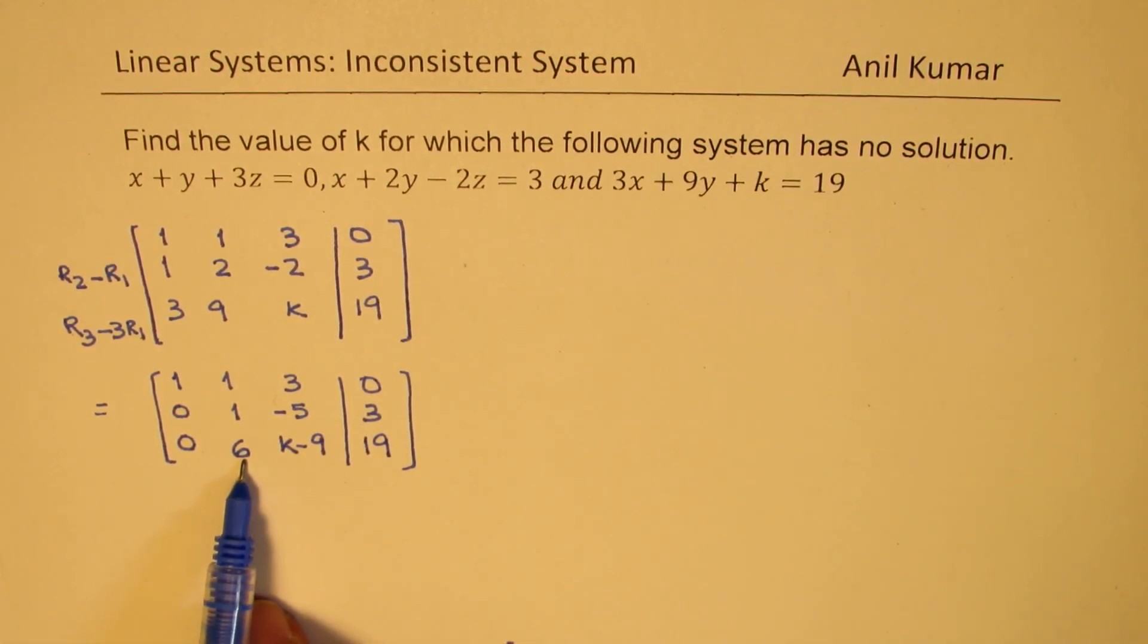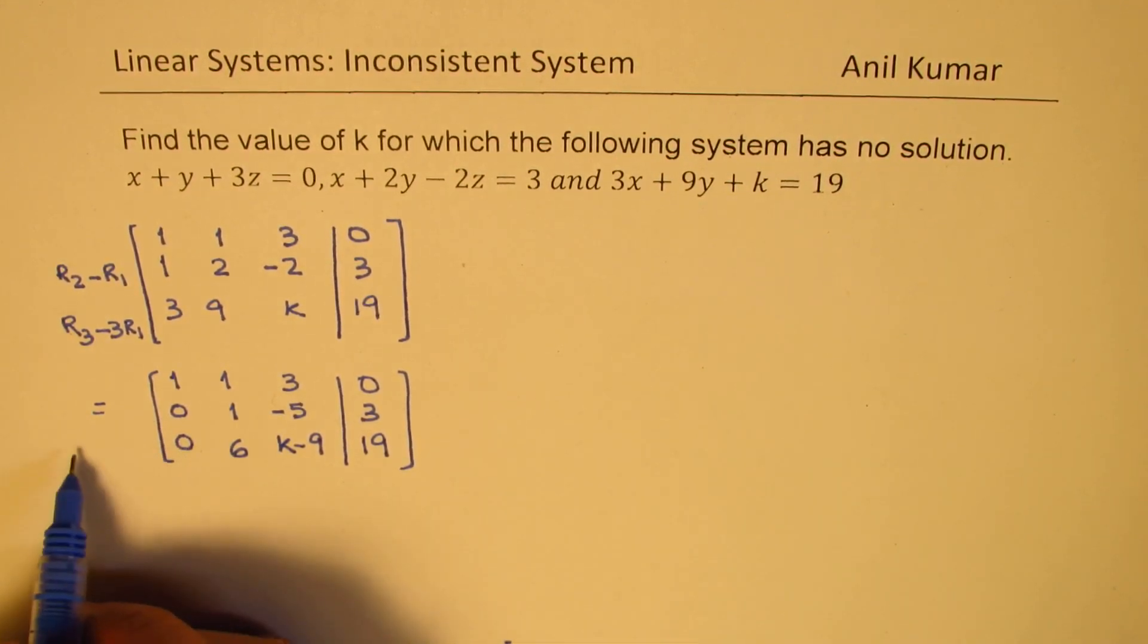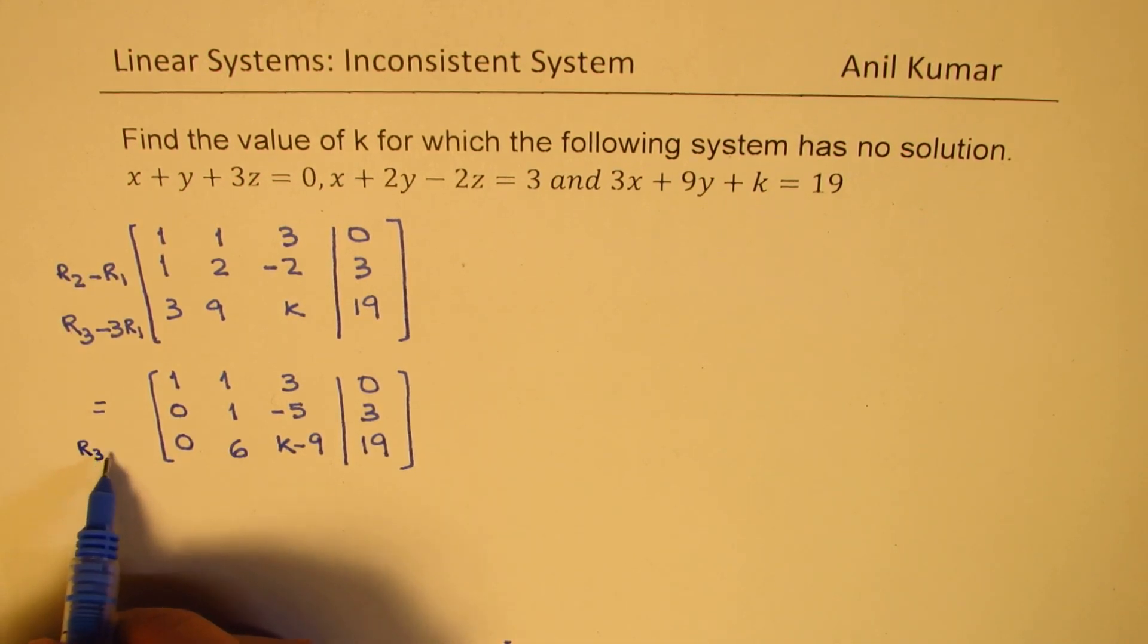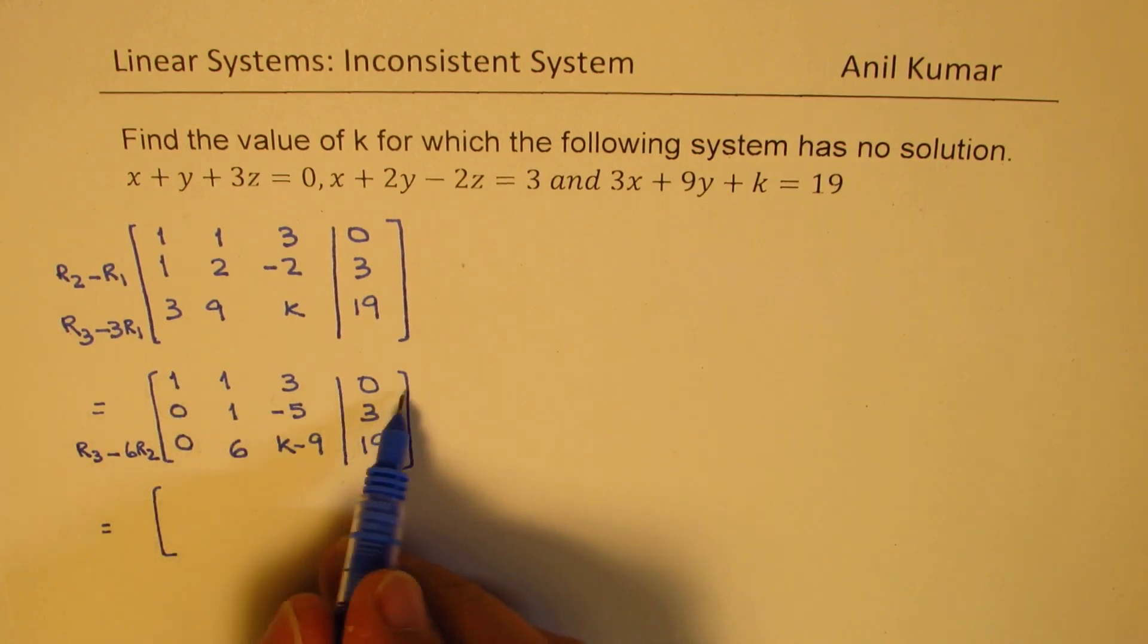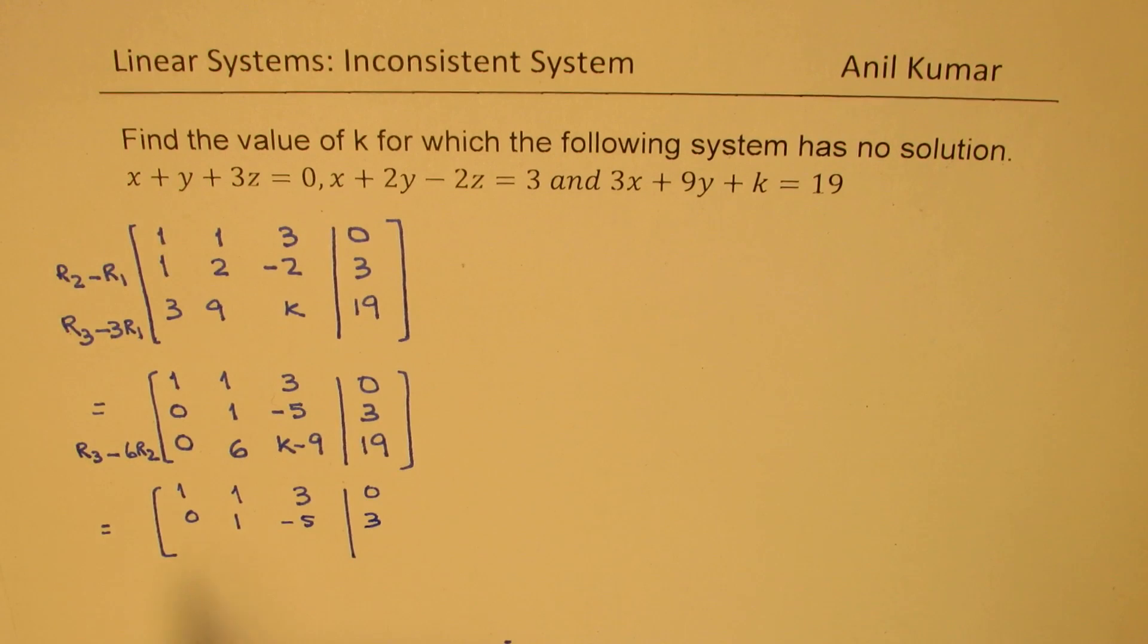Now we will try to make 6 as 0. Now how can we do this? We need to now consider the operation, we could do r3 minus 6 times r2. So let's do this now. So what we get here is we will leave this as such: 1, 1, 3, 0. The next one also as such: 0, 1, minus 5, 3. Now if I do this 6 times, 0 minus 0 is 0. 6 times 1 is 6, we get 0. So 6 times minus 5 will be 30, so when you take away you get plus 30 here. So we get here k minus 9 and take away makes it plus 30. 6 times 3 is 18. When you take away 18 from 19 you get 1.